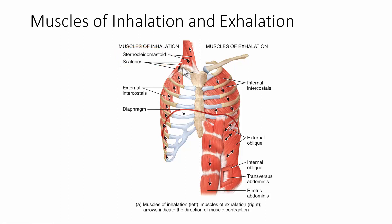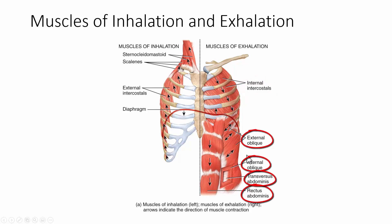Exhalation is typically passive, because of the elasticity within the muscles and tissues of the chest cavity. When the diaphragm relaxes, it returns to its dome shape, and the elasticity of the alveoli and the chest wall brings the ribs back down and pushes air out. Occasionally, we need to exhale more forcefully — for example, when blowing up a balloon or blowing out a candle. That's where the internal intercostals come in, pulling the ribs down, along with the abdominal muscles: the rectus abdominis, external oblique, internal oblique, and transversus abdominis — all used for forceful exhalation.